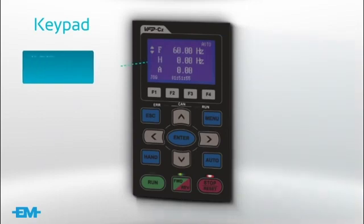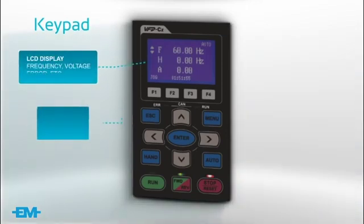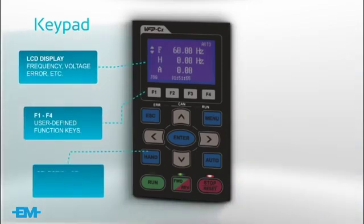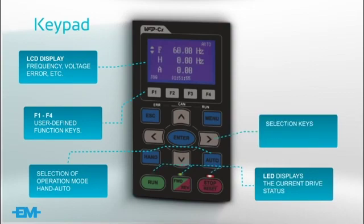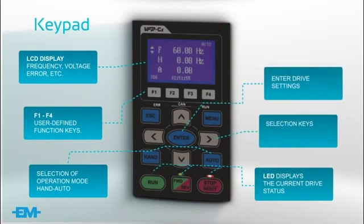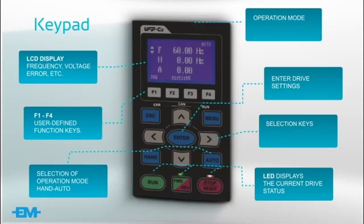By default, the drive parameters are set up for keypad control, using the run and stop keys to operate the drive and the cursor keys to change the speed.